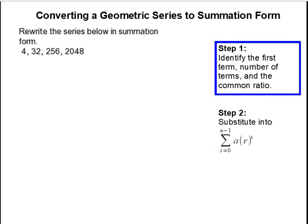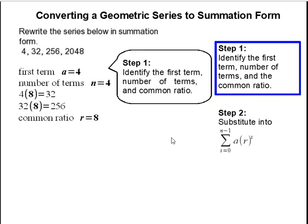Step 1. Identify the first term, number of terms and common ratio. The first term here is 4 and we're going to use a to represent that. Then the number of terms, we have 4 terms and we're going to use n to represent that.